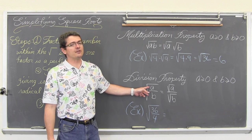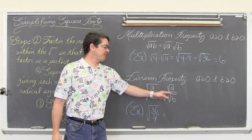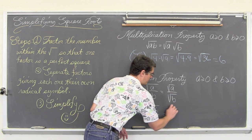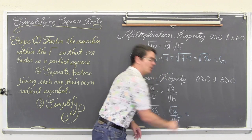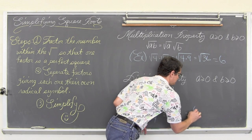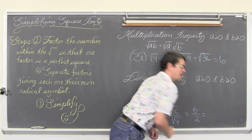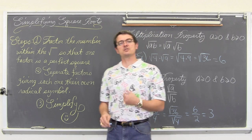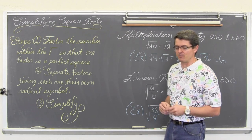Using the property, where I have a fraction underneath the square root symbol, I can give each factor — the numerator and denominator — their own square root symbol. So this is equal to the square root of 36 over the square root of four. The square root of 36 is six, the square root of four is two, and six divided by two is indeed equal to three — the same answer we got when we just did this easy problem in our head.